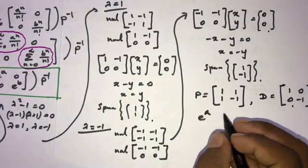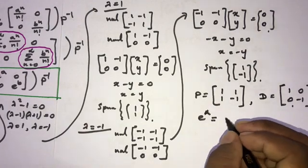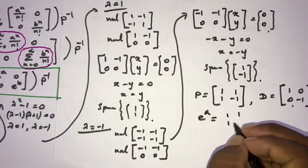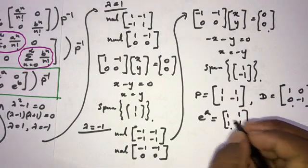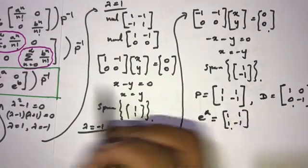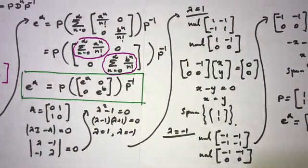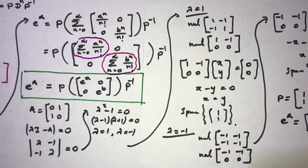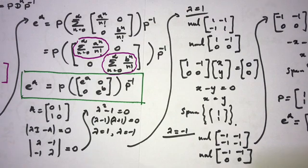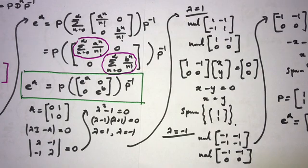Now we can write e to the A equals P times the diagonal matrix [[e to the 1, 0], [0, e to the minus 1]] times P inverse. Finding the inverse of the 2 by 2 matrix P gives P inverse equals one half times [[1, 1], [1, -1]] — wait, correcting: one half times [[-1, -1], [-1, 1]].